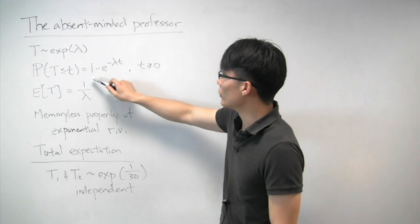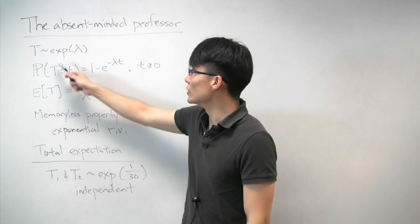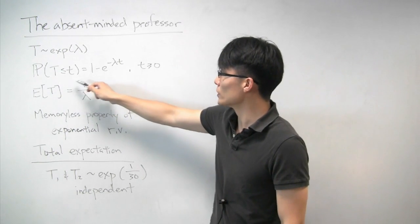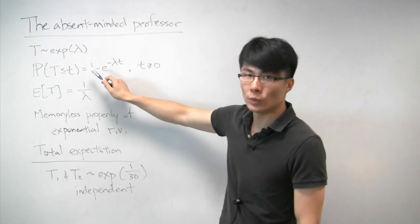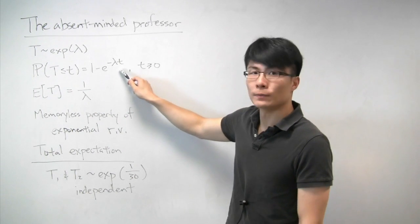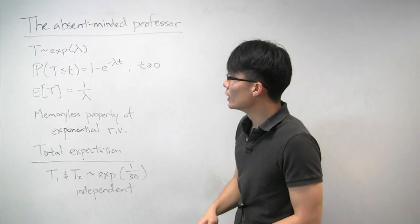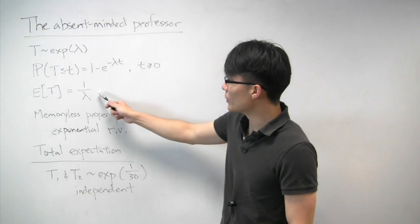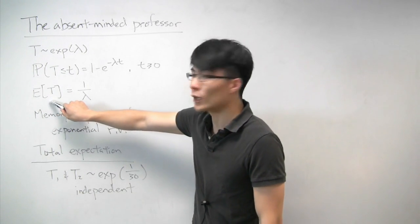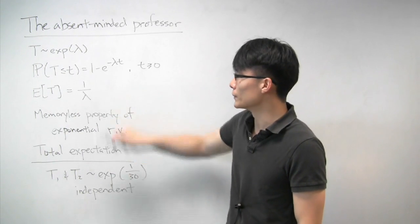One thing that will be useful is the CDF of this exponential random variable. The probability that it's less than or equal to some value little t is equal to 1 minus e to the minus lambda t, valid only when t is non-negative. The expected value of an exponential random variable is just 1 over the parameter lambda.